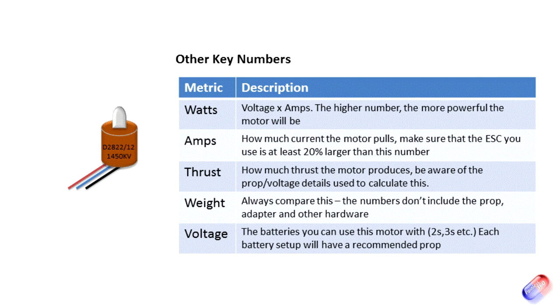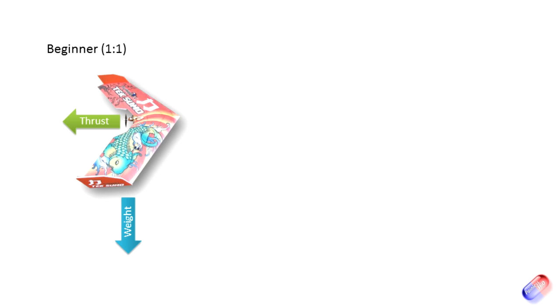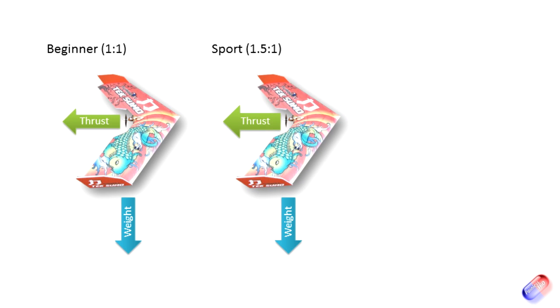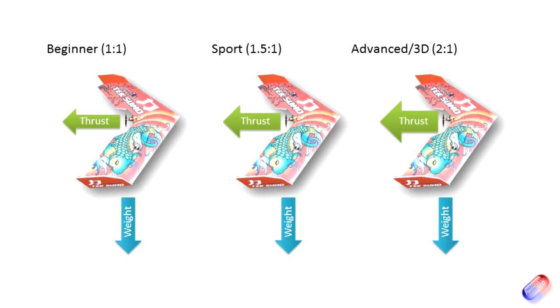So for example, if you have a 500 gram model, then for a plane you'd want 500 grams of thrust, which would give you kind of average flying, pootling around, great for starters. About one and a half times, so 750 grams of thrust, would give you great sport flying conditions. And two to one, a thousand grams of thrust on a 500 gram model, would give you extreme performance, 3D, being able to hang off the prop and those kind of bits and bobs.